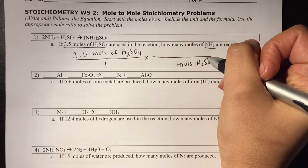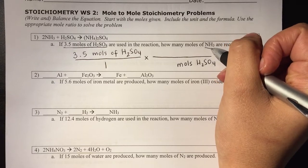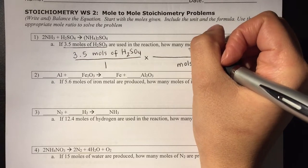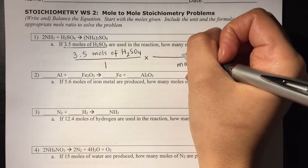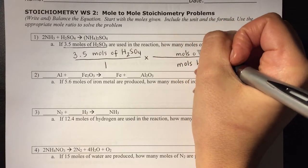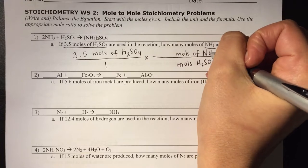And then whatever I'm trying to get to is what I want to put on top. So I want them to know how many moles of NH3 there are. So moles of NH3.